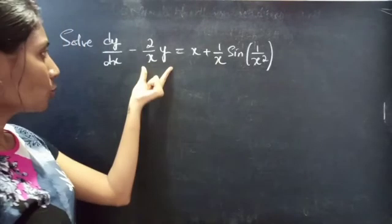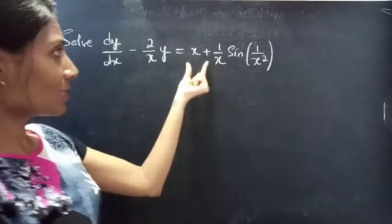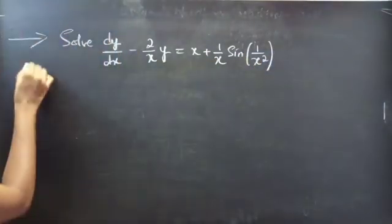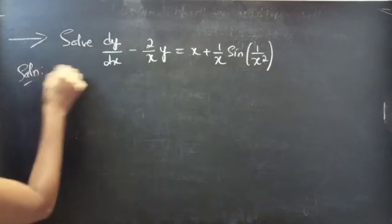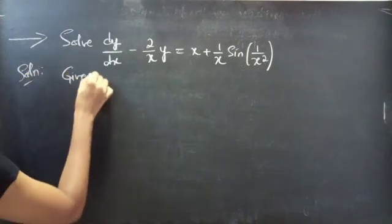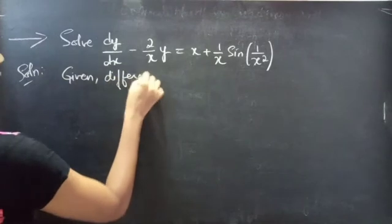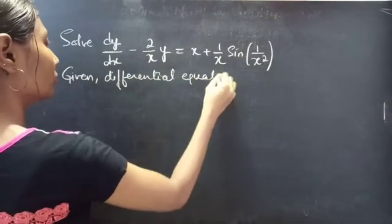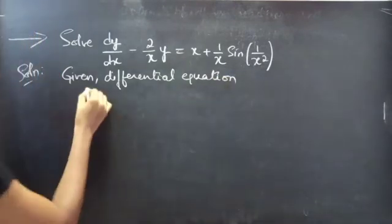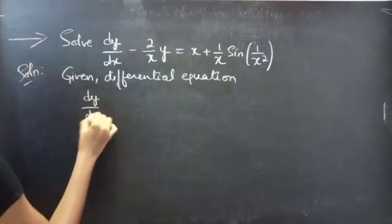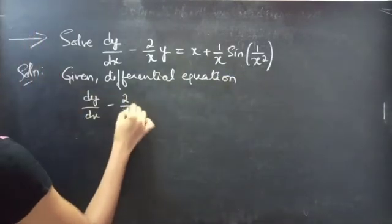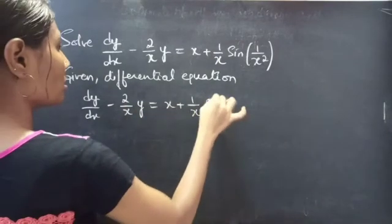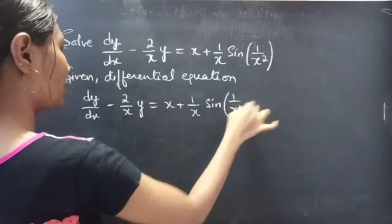Problem to solve: dy/dx minus (2/x) times y equals (x + 1/x) times sine(1/x²).